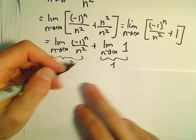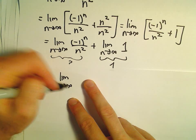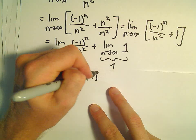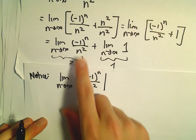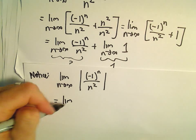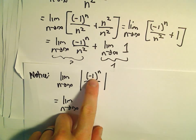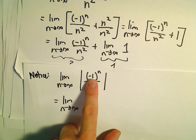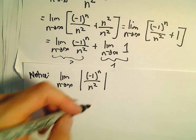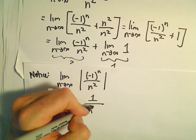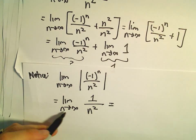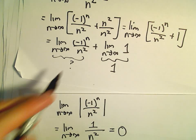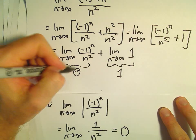To bring in the absolute value theorem, notice that the limit as n goes to infinity of the absolute value of negative 1 to the n over n squared — looking at just this first part — equals the limit as n goes to infinity of 1 over n squared. Without the absolute value we get positive or negative 1, but taking the absolute value of the numerator gives us just positive 1 over n squared. The denominator gets arbitrarily large, so 1 over a big number goes to 0. By the absolute value theorem, this first limit is 0.